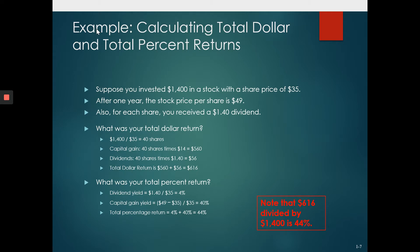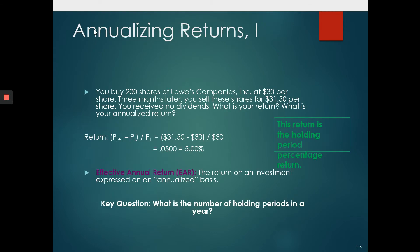The price appreciated by $14 ($49 minus $35), so $14 multiplied by 40 shares gives a capital gain of $560. Plus you got a dividend on 40 shares: $1.40 multiplied by 40 shares equals $56. So the total dollar return is $616... sorry, $560 plus $56 equals $616 — and the percentage return is that dollar return divided by the total investment of $1400, which turns out to be 44 percent return.